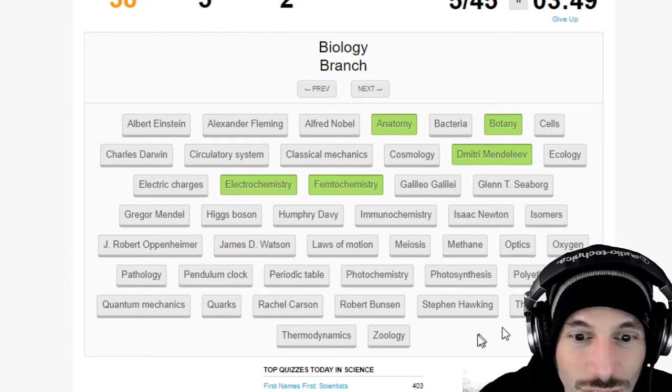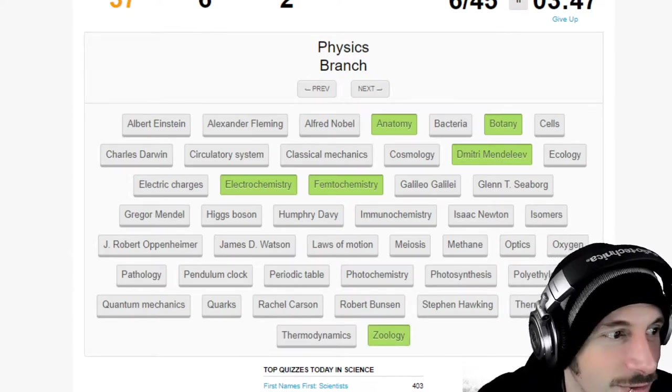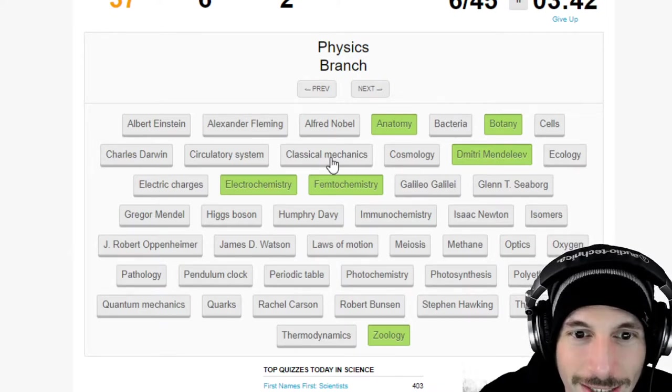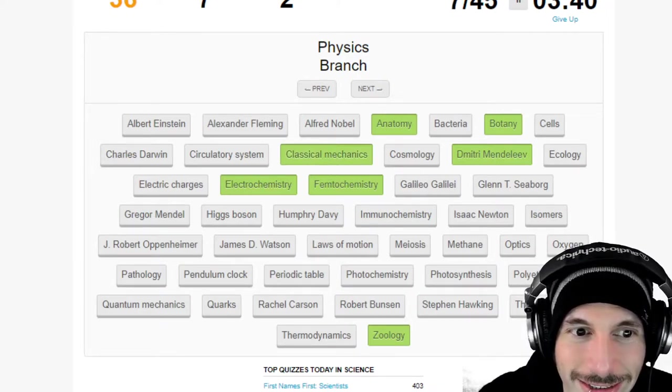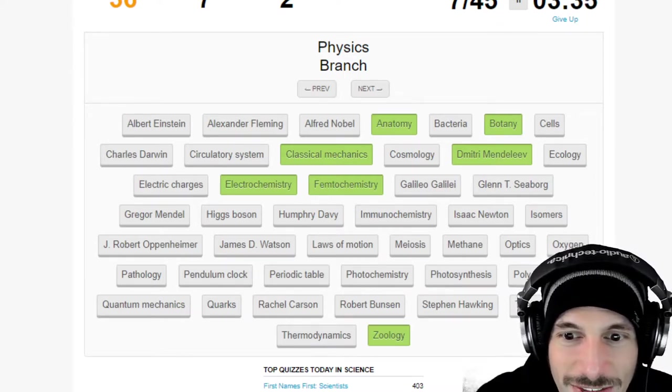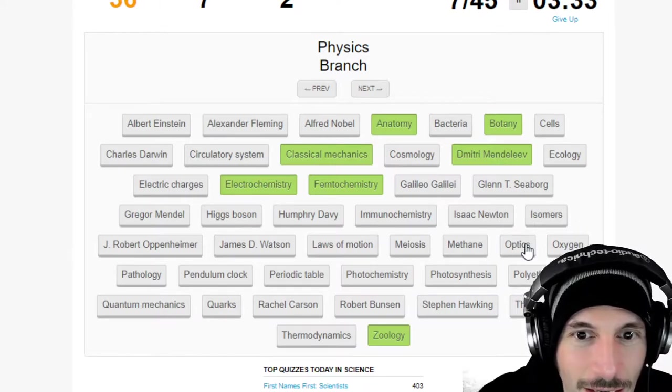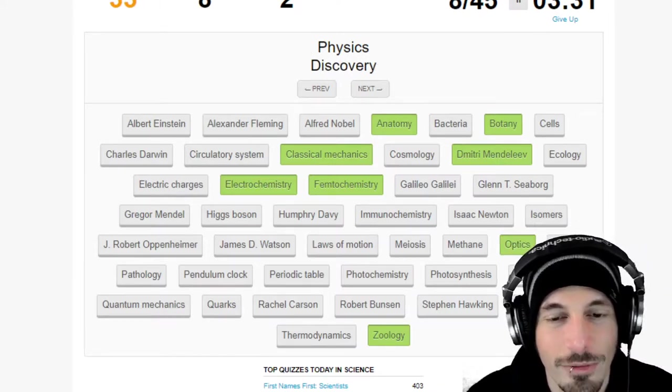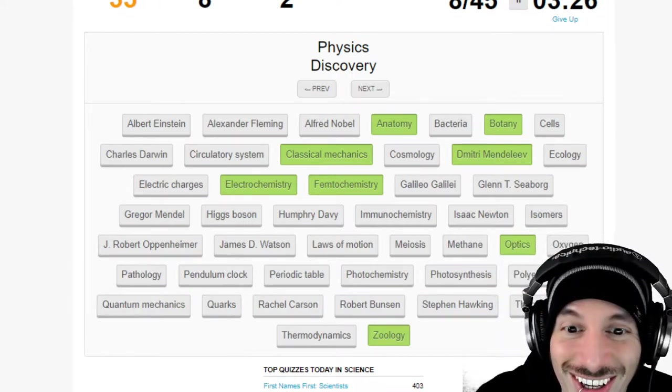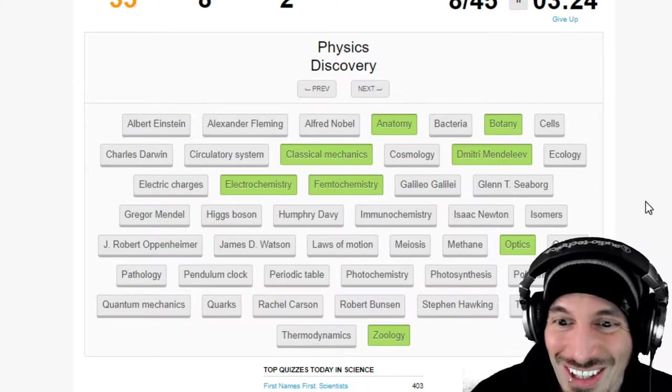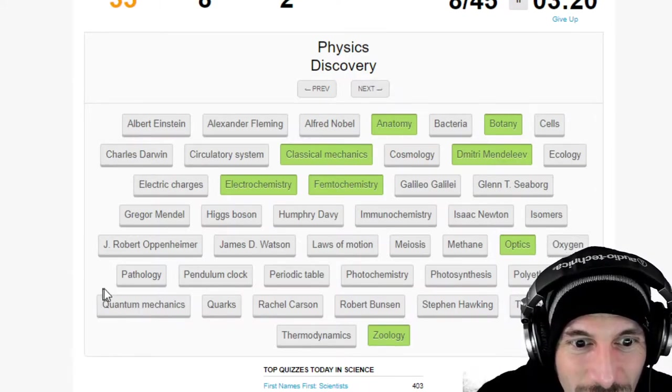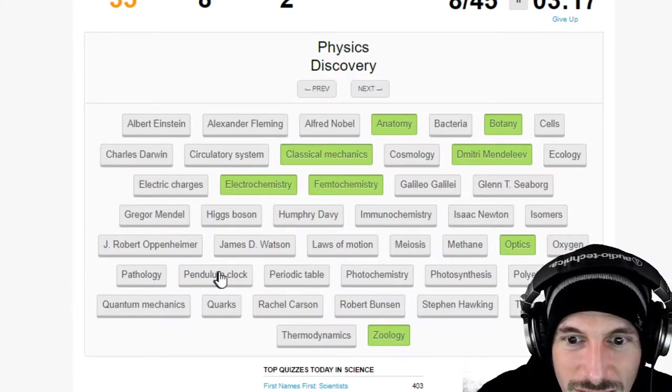Another biology branch, immunochemistry probably not a biology branch. Biology branch zoology nice. These are easier than I thought some of these. Physics branch, classical mechanics, you think that's one? Nice. Another physics branch, optics, nice. Physics discovery, physics, gravity, I'm so excited. Gravity, is that a physics discovery? Physics discovery, hey pendulum clock would that be a physics discovery?